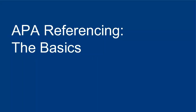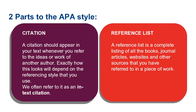Welcome to part two, where we will introduce you to the basics of the APA style. There are two parts to the APA style: a citation and a reference list. A citation should appear in your text whenever you refer to the ideas or work of another author. We often refer to it as an in-text citation.